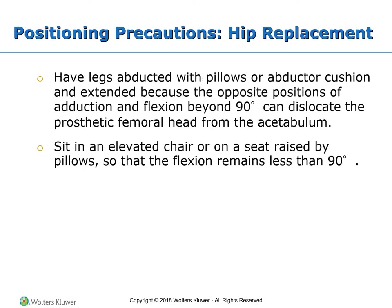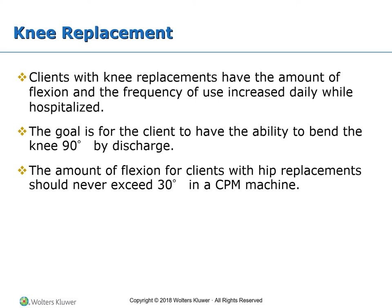The client with a total hip replacement needs to have the legs abducted with pillows or abductor cushions and extended, because adduction and flexion beyond 90 degrees can dislocate the prosthetic femoral head from the acetabulum. Clients with total hip replacement need to sit in an elevated chair or seat raised by pillows so that flexion remains less than 90 degrees. Clients with knee replacements should have the amount of flexion and frequency of use increased daily while hospitalized, with a goal of bending the knee 90 degrees by discharge. The amount of flexion for clients with hip replacements should never exceed 30 degrees with the CPM machine.